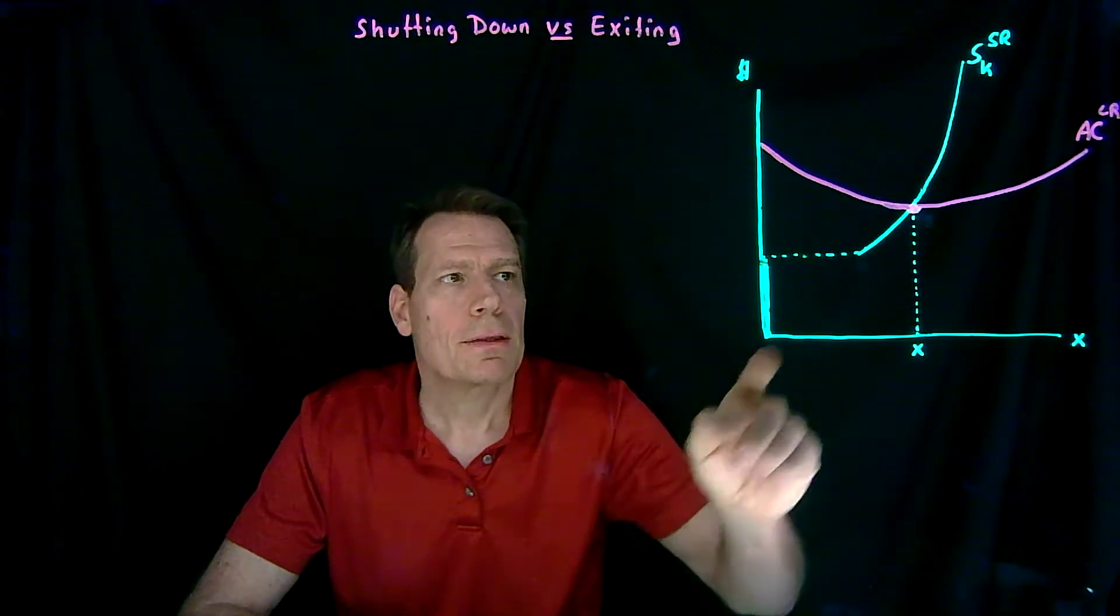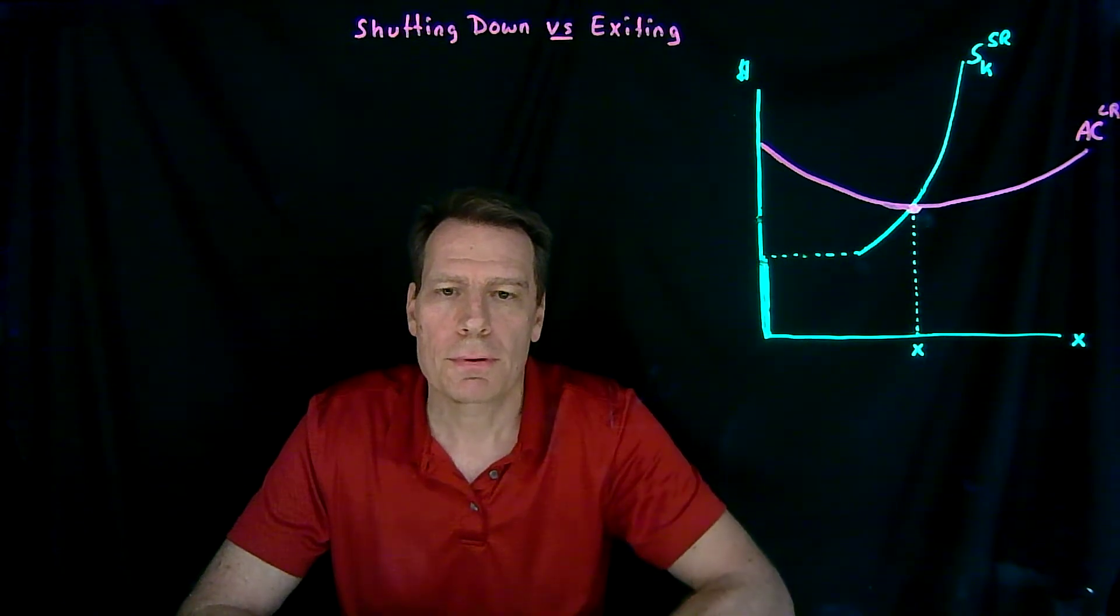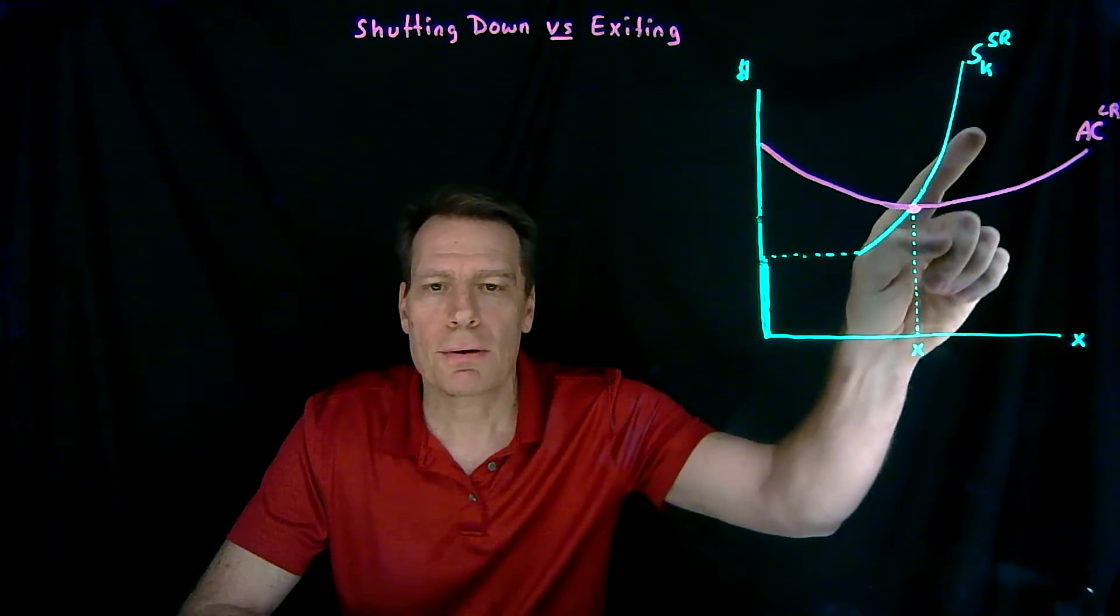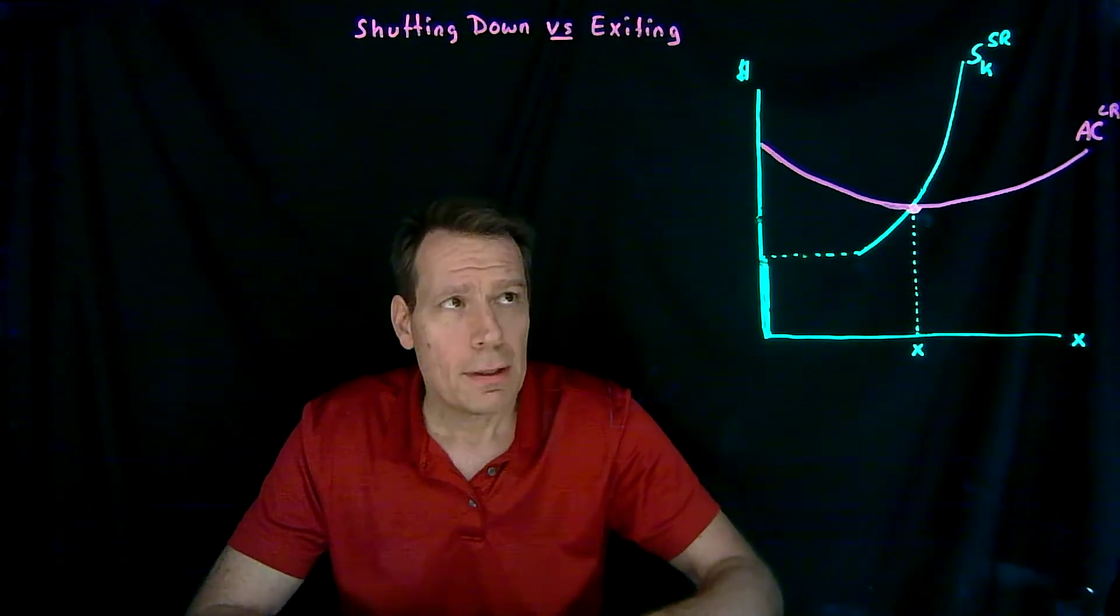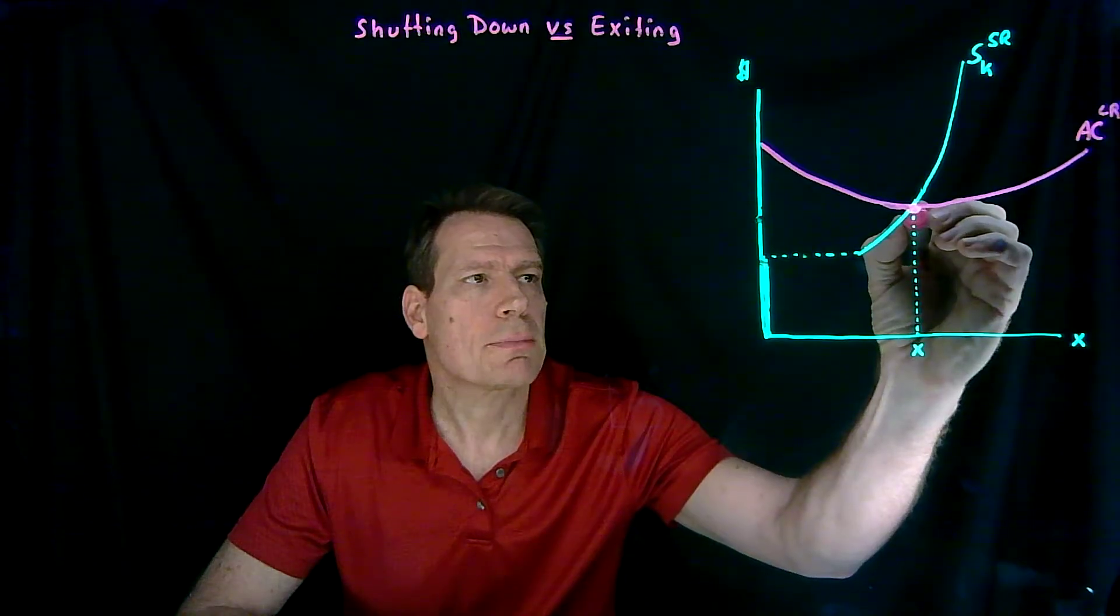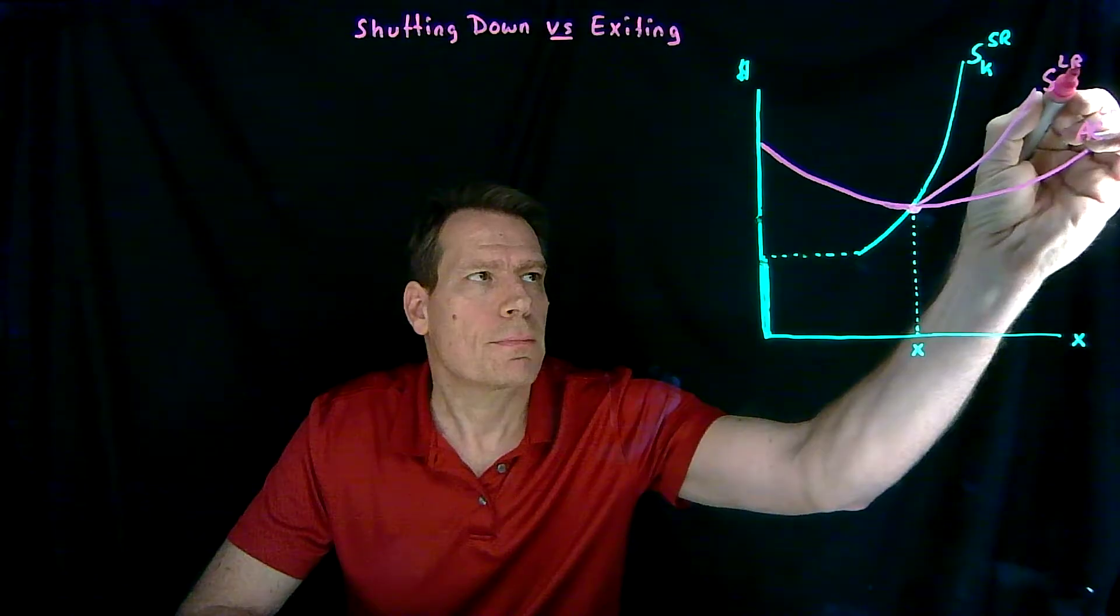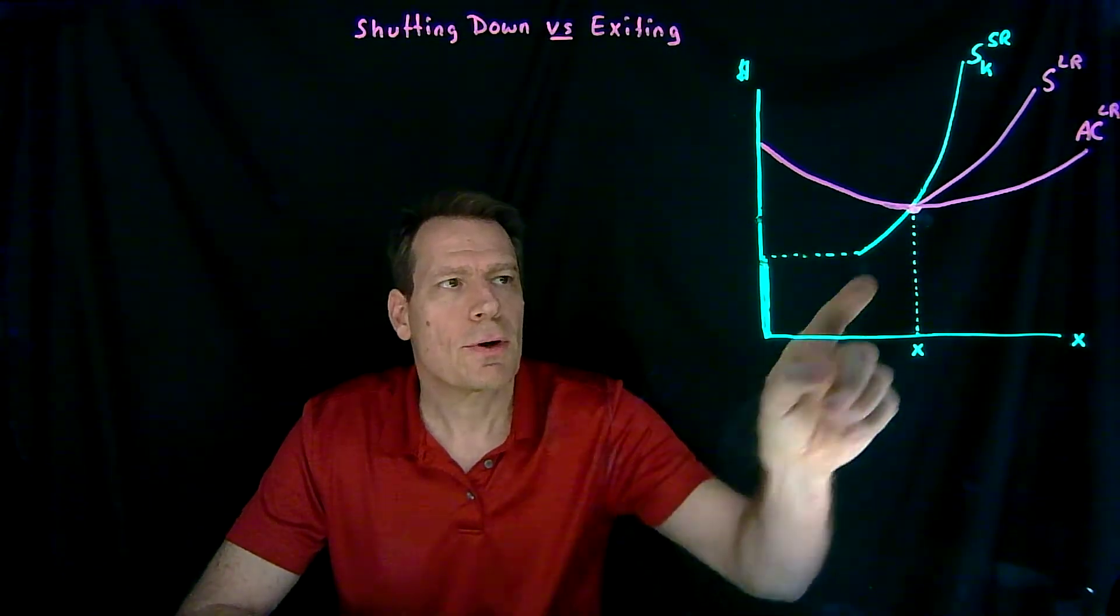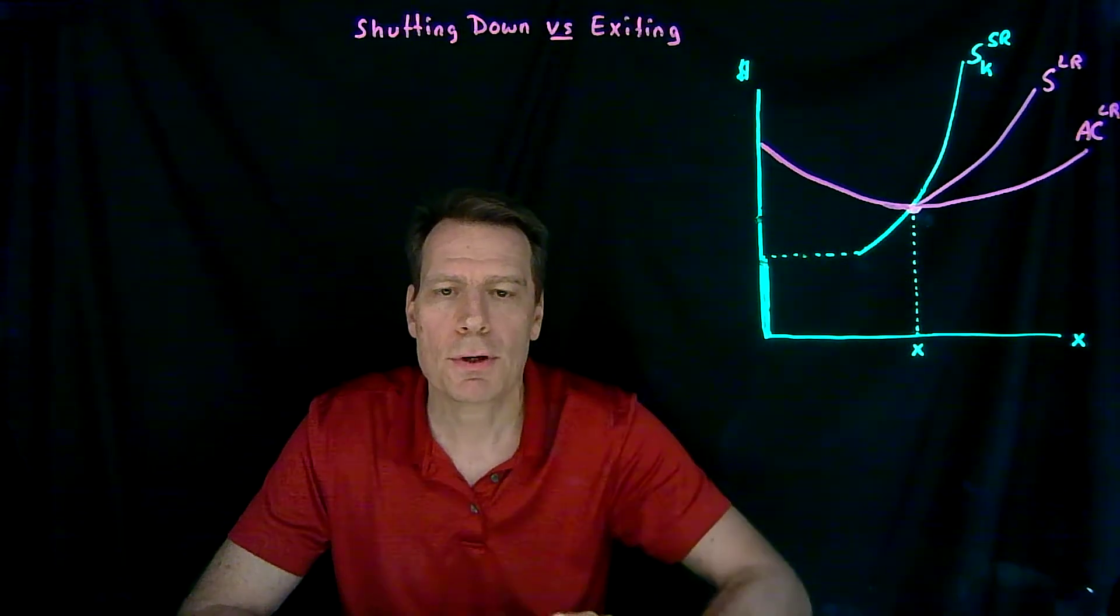In the long run, the break-even price happens at the lowest point of the long-run average cost curve. So that's where the supply curve in the long run is going to start, and it's going to be shallower than the short-run supply curve that we've drawn. It's going to look something like this. This is the long-run supply curve. It starts at the break-even price in the long run, the lowest point of the long-run average cost curve.